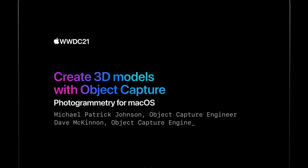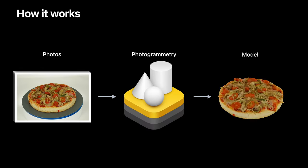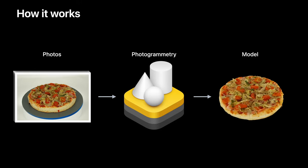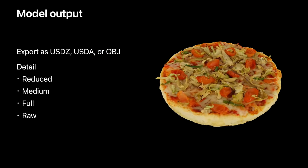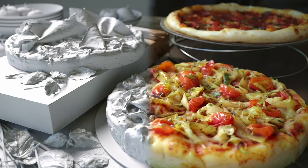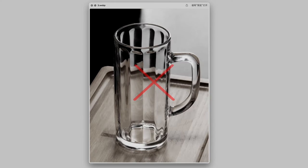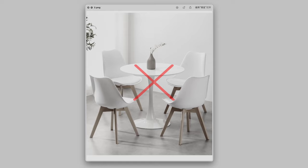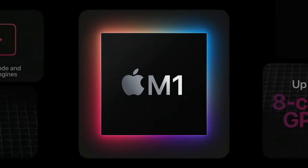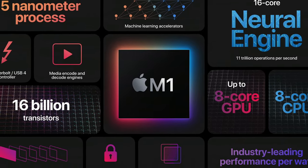Object Capture API isn't even something new. It's a photogrammetry algorithm that Apple introduced three years ago in WWDC 2021. It wasn't that popular in the past three years because there's really nothing special compared to the traditional photogrammetry algorithm. It has the same issues with getting shiny, transparent, or simple color objects. And the Object Capture API only ran on Apple M chips back then, which greatly limited its use cases.